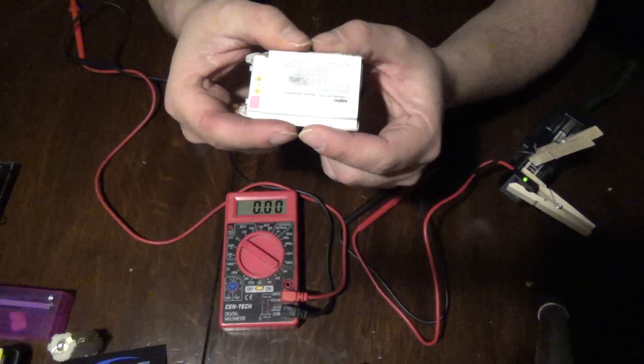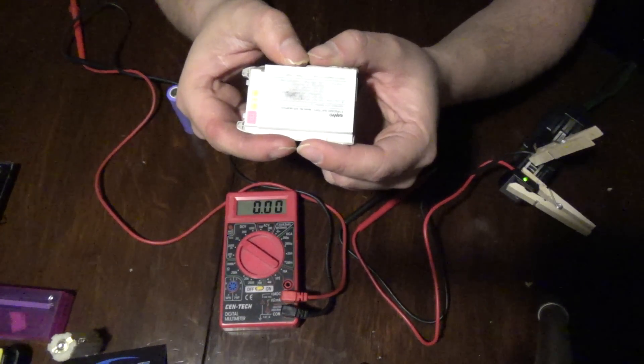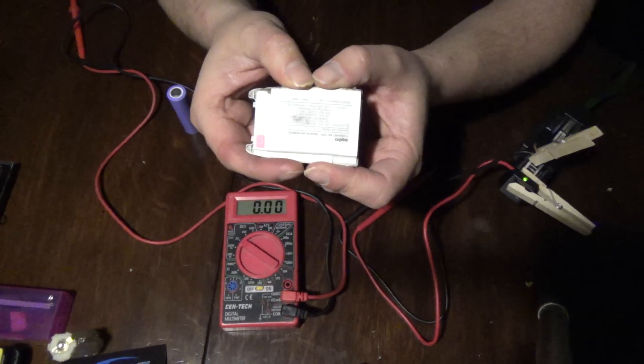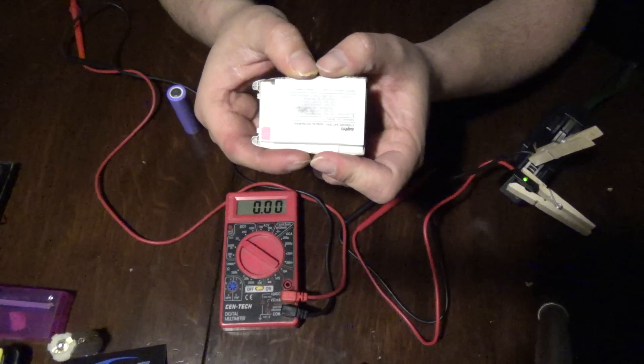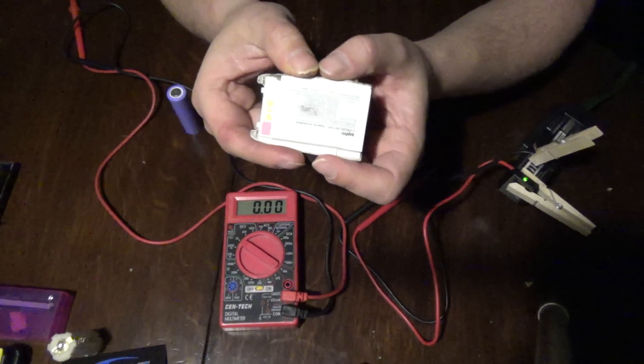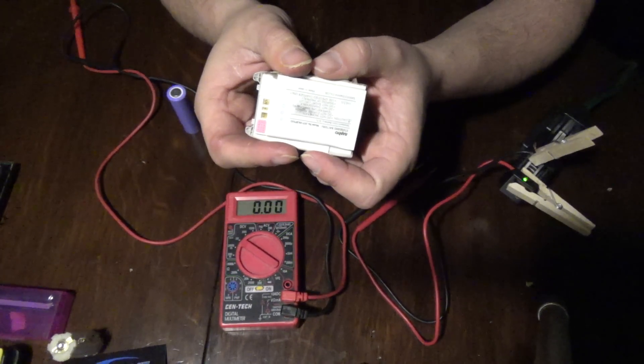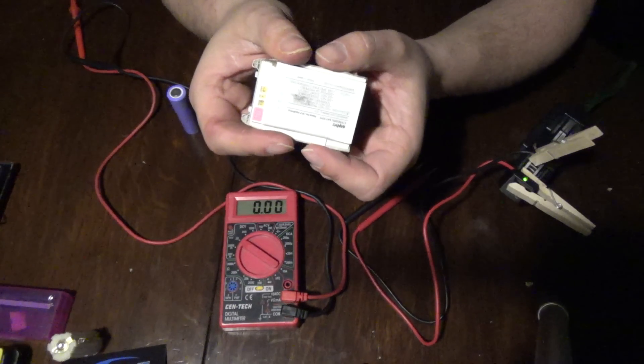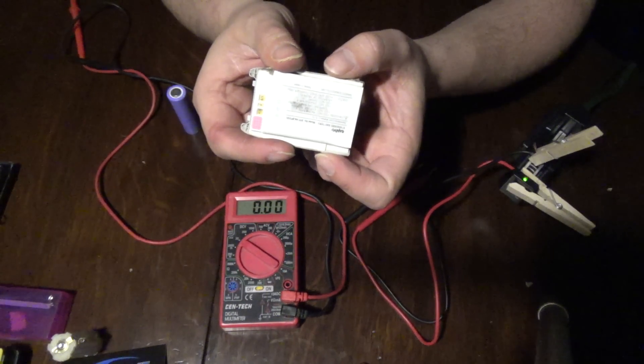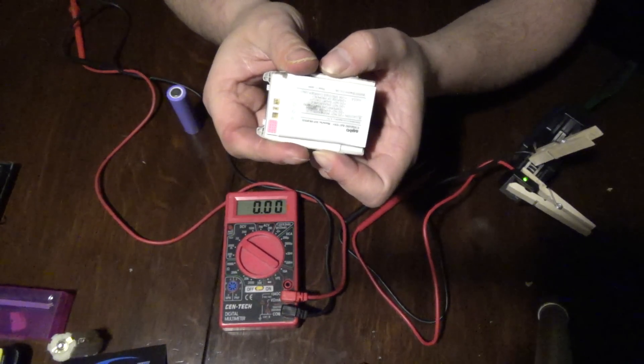And basically, those chips manage three main components. One is overvoltage, so if you charge the cell to a voltage too high and bring it into its danger zone. Undervoltage, so if the voltage drops too low, it will actually completely disable power flow and temperature.